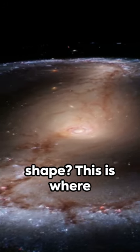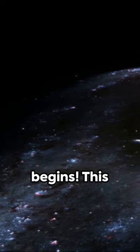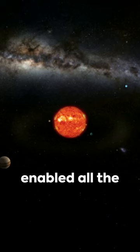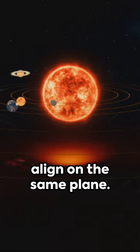But why a disk shape? This is where the cosmic ballet begins. This flattened form enabled all the celestial bodies to align on the same plane.